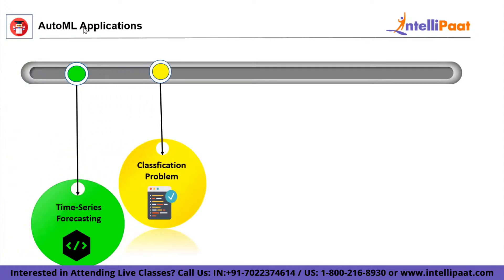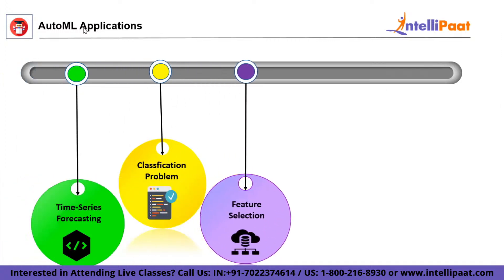Then we have the classification problem — a type of learning in which data is assigned to a label or class. Handwriting recognition, item detection, and fraud detection are all instances of classification problems. AutoML can assist in automatically deploying an advanced classification machine learning model to generate insights in no time. Then we have feature selection. Predictors, also known as features, are critical components of an ML model. They frequently rely on machine learning algorithm selection, which, if not done correctly, can affect model development time and scoring.